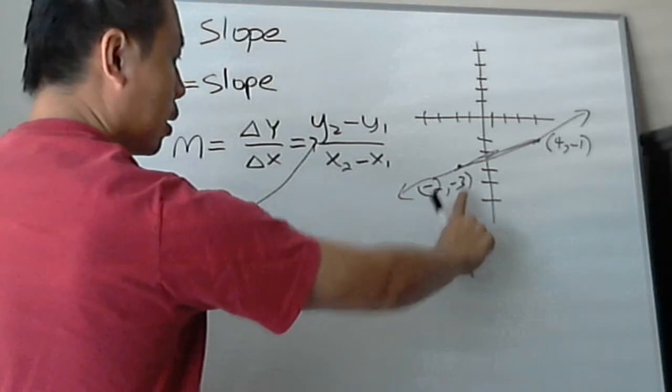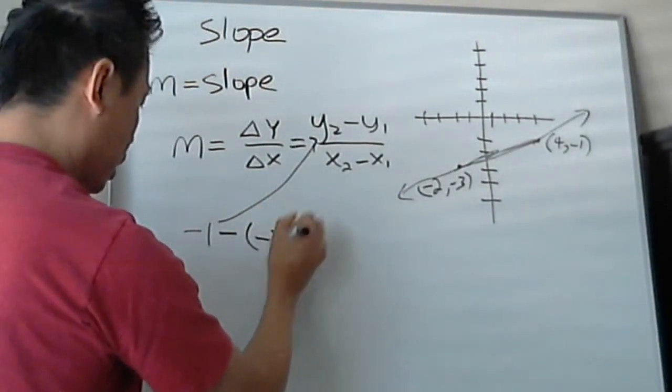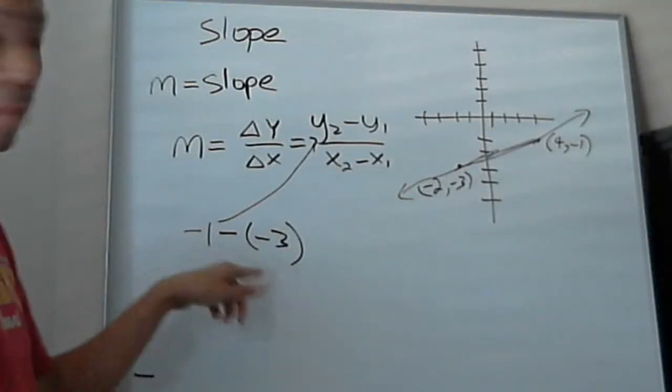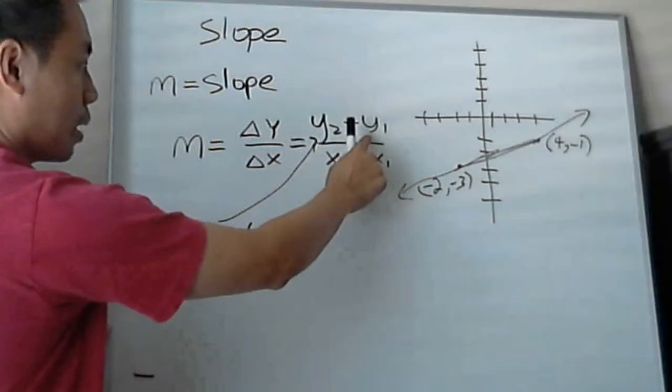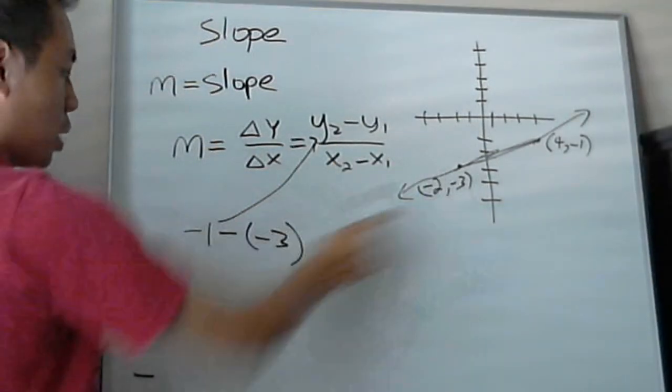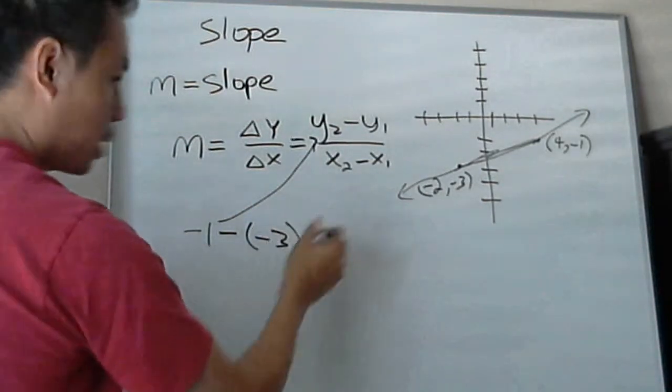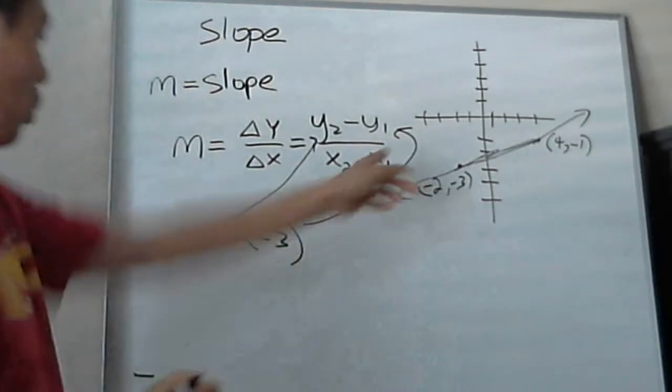Minus Y1. Remember, minus Y1. Notice I didn't put negative 1 minus 3. I put negative 1 minus a negative 3. You can't ignore that Y1 is negative 3. So if it was 3, then you put 3, but it says negative 3 there. So this will be Y1.